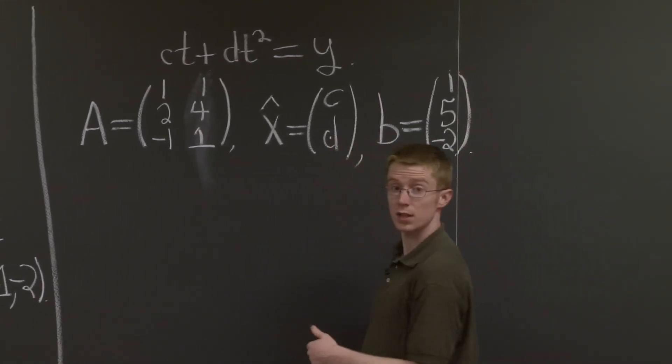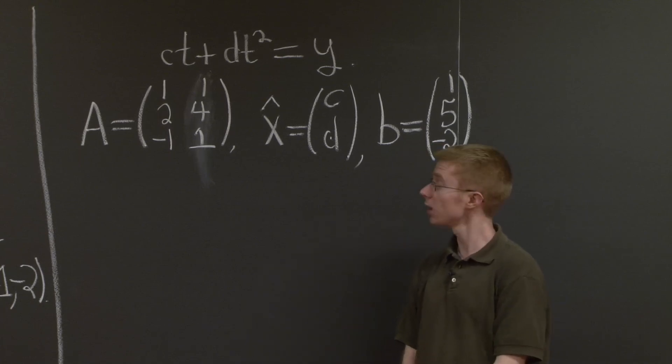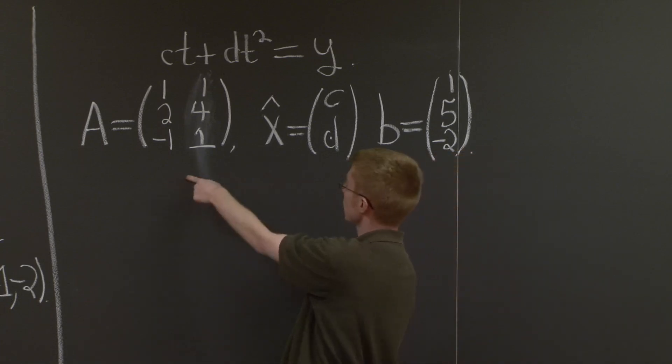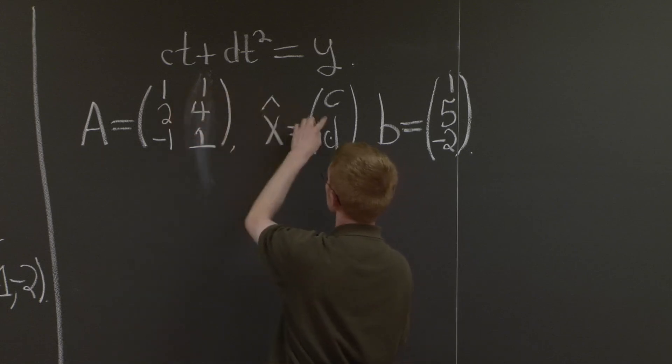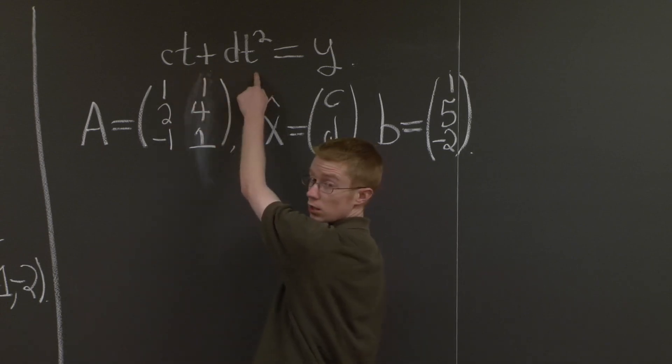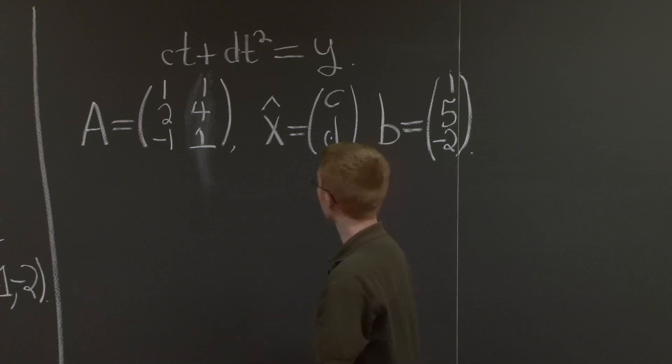OK, why did I set this problem up like that? Well, multiply A times x hat. The first coordinate of A times x hat is 1 times c plus 1 times d. It's just the same as plugging in this first point into the left-hand side of this equation.